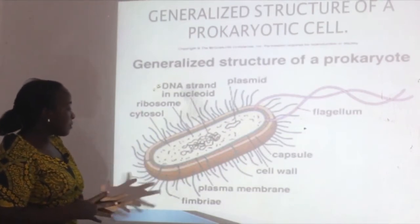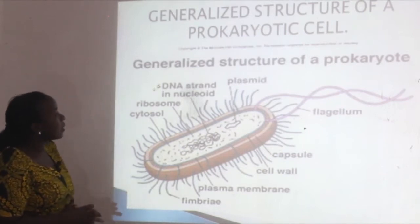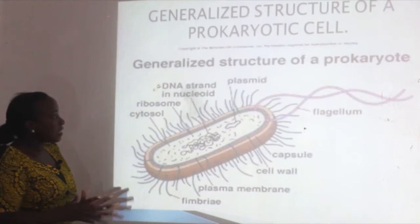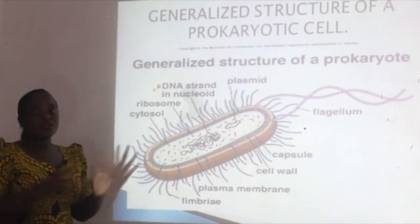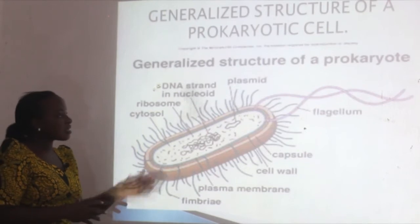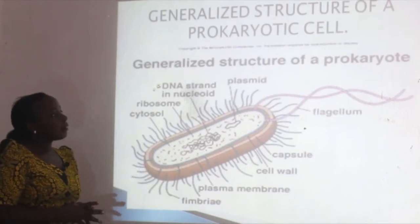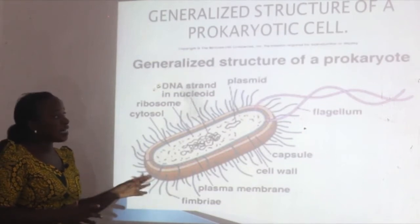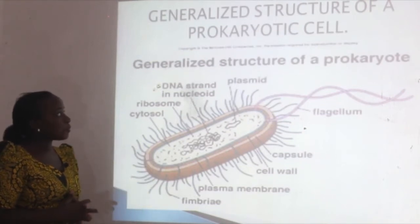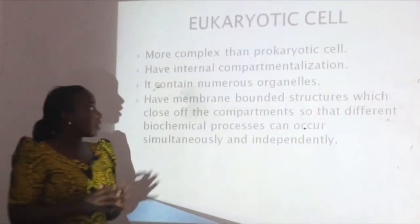The prokaryotic cell structure also includes the plasma membrane, mesosome, ribosomes, and DNA strand in the nucleoid region. We are not going to discuss in detail the functions of these parts of the prokaryotic cells because we will discuss them later on.